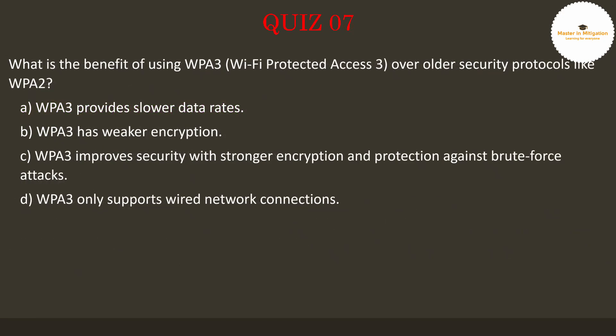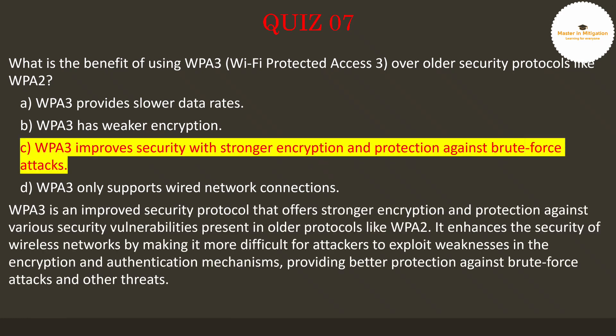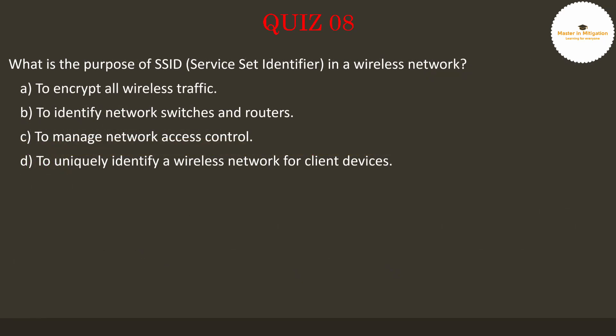Question 7: What is the benefit of using WPA3 (Wi-Fi Protected Access 3) over older security protocols like WPA2? Pause the video now to select the best answer. The answer is C: WPA3 improves security with stronger encryption and protection against brute force attacks. WPA3 is an improved security protocol that offers stronger encryption and protection against various security vulnerabilities present in older protocols like WPA2. It enhances security by making it more difficult for attackers to exploit weaknesses in encryption and authentication mechanisms, providing better protection against brute force attacks and other threats.